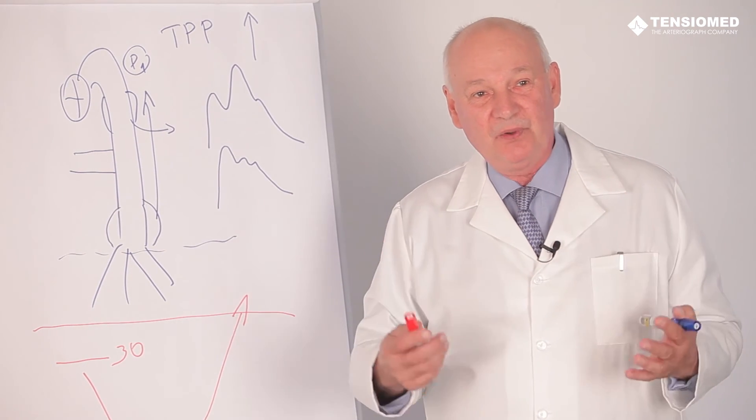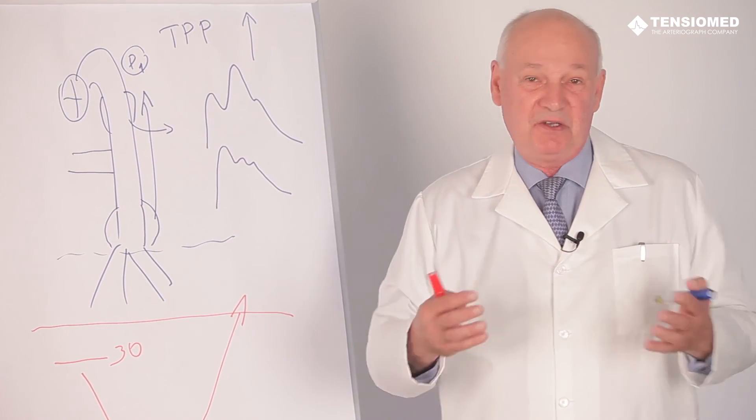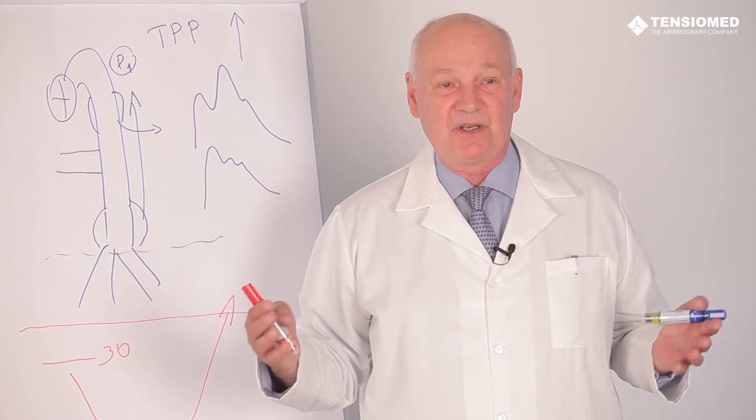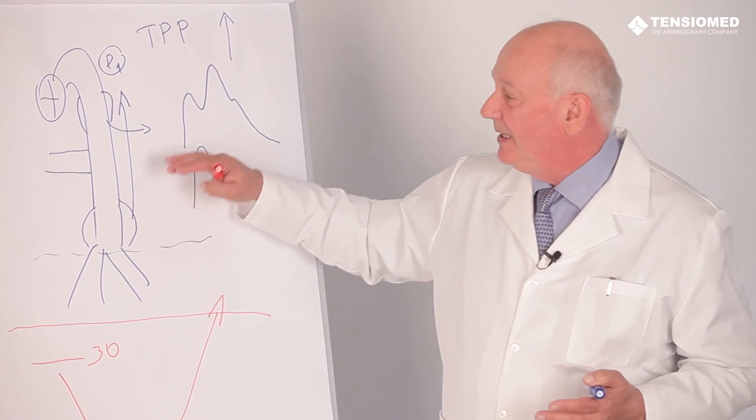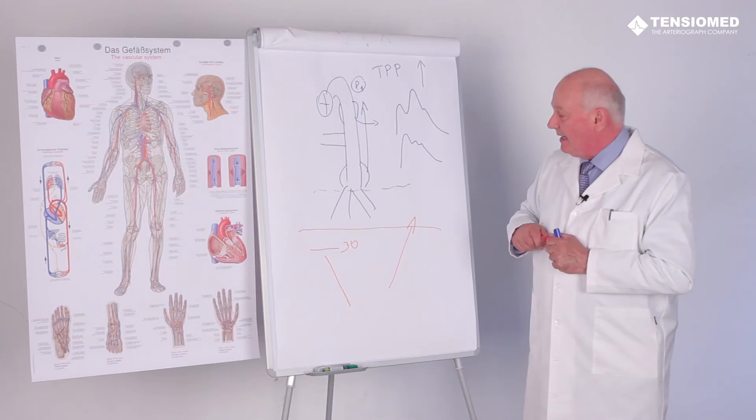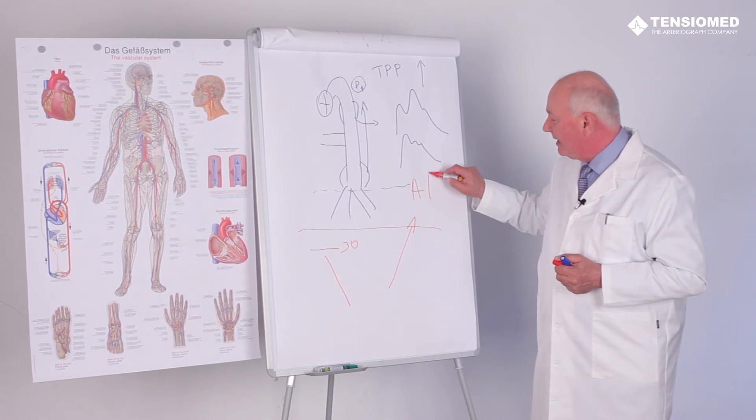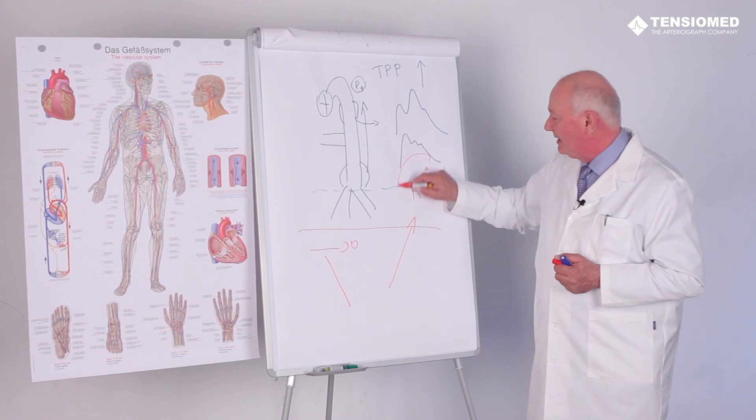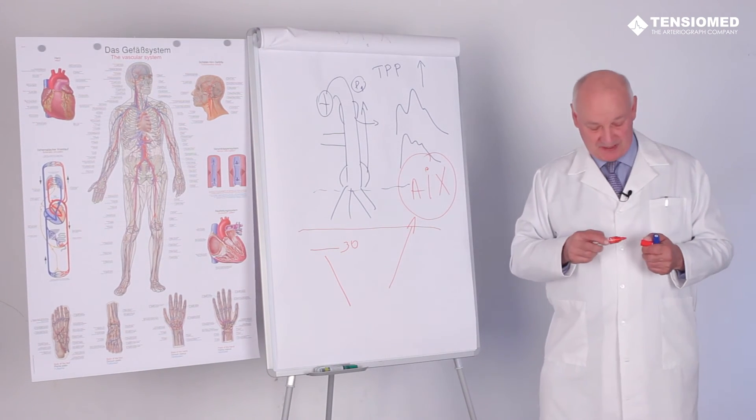Thus, if we follow this standardized situation, which is more or less similar to blood pressure measurement, we could obtain a very nice parameter in the augmentation index. That is a nice marker of the actual peripheral vascular resistance.